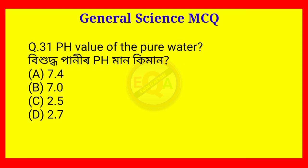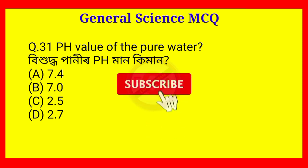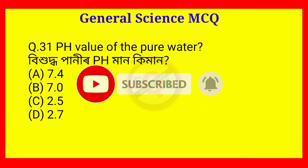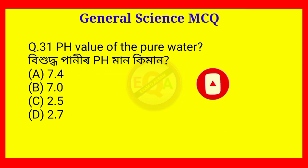Question number 31. What is the pH value of pure water? The answer is Option B — 7.0.